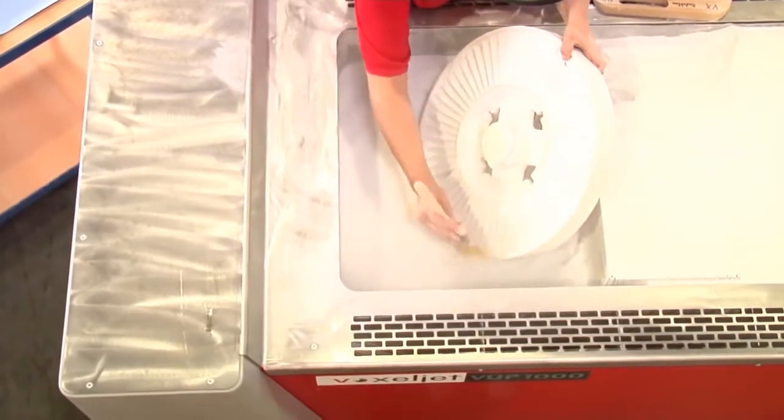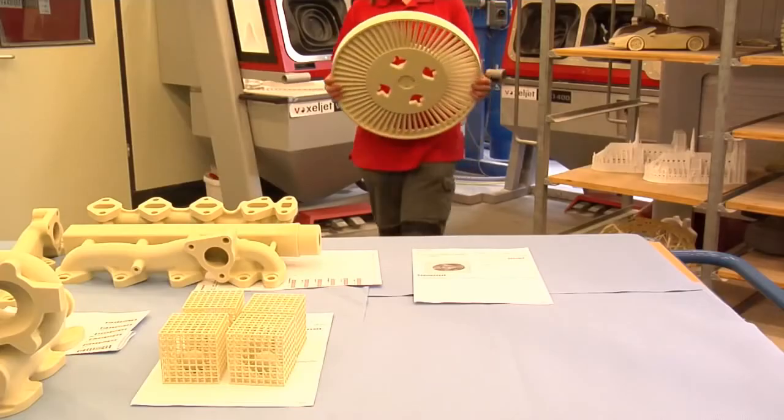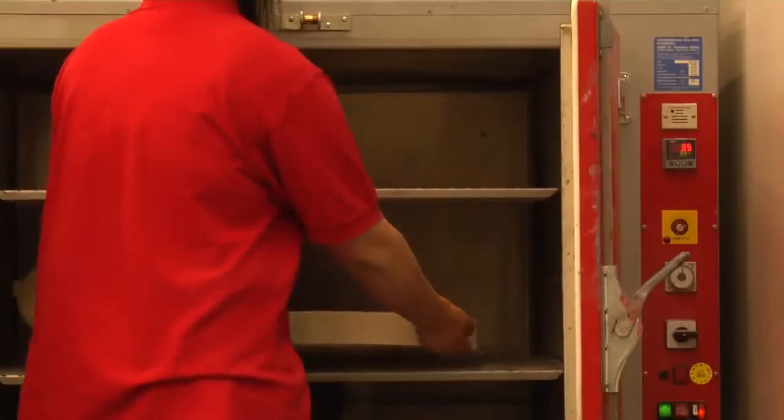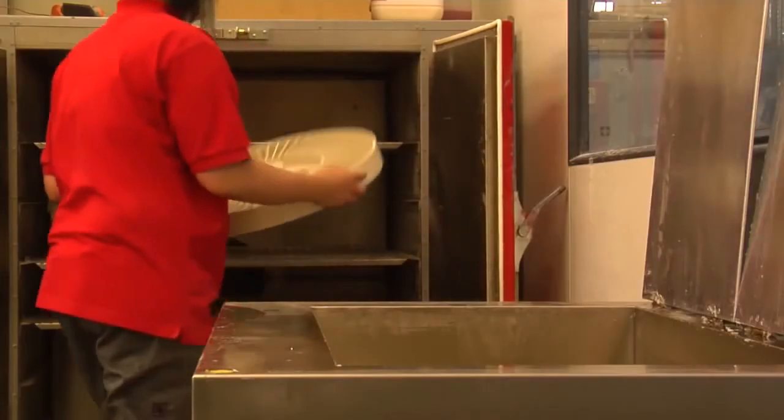Then the plastic part can be unpacked. The unprinted powder, 100% of which can be reused, is removed with an industrial vacuum and compressed air. The molds are characterized by maximum detail accuracy and precision.